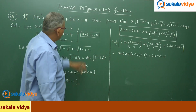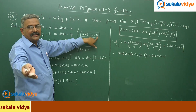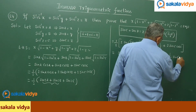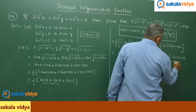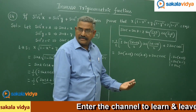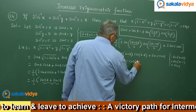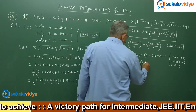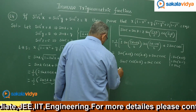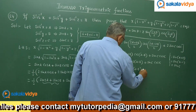Now, since A + B + C = π, we have A + B = π − C, so sin(A + B) = sin(π − C) = sin C, because sin(180° − θ) = sin θ. Replacing, we get sin C · cos(A−B) + sin C · cos C. Taking sin C common, this gives sin C · [cos(A−B) + cos C].